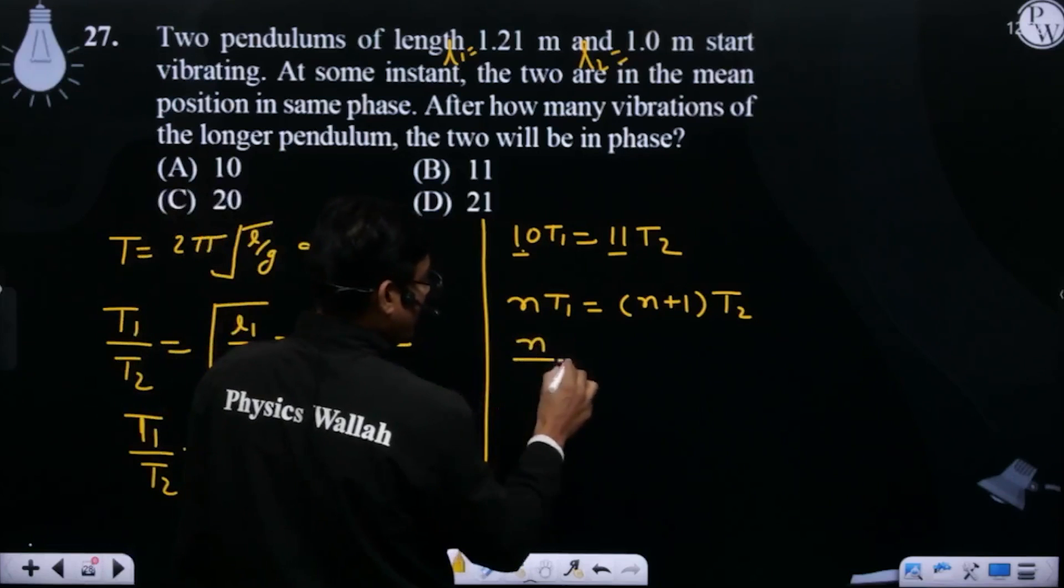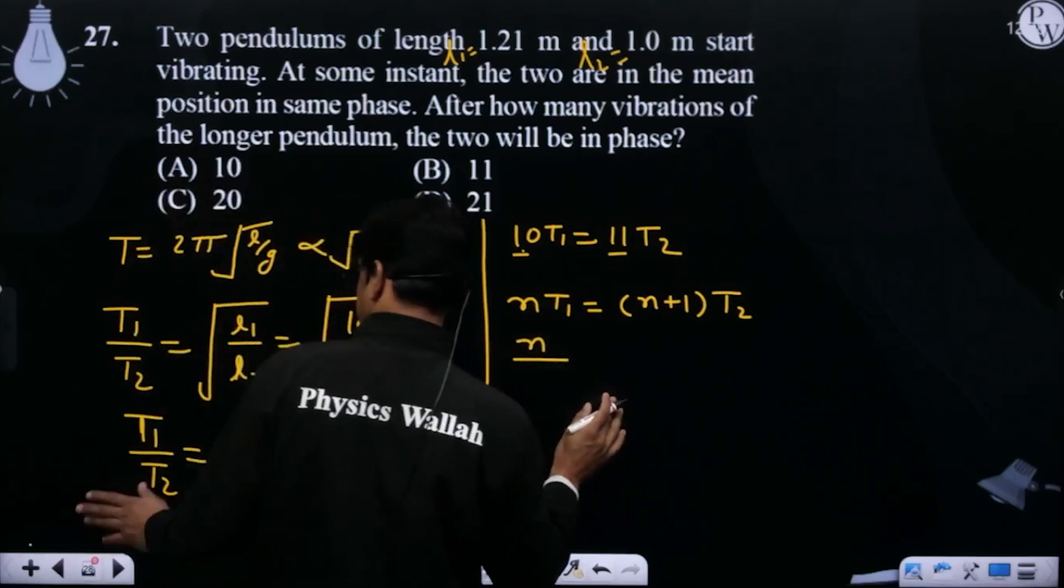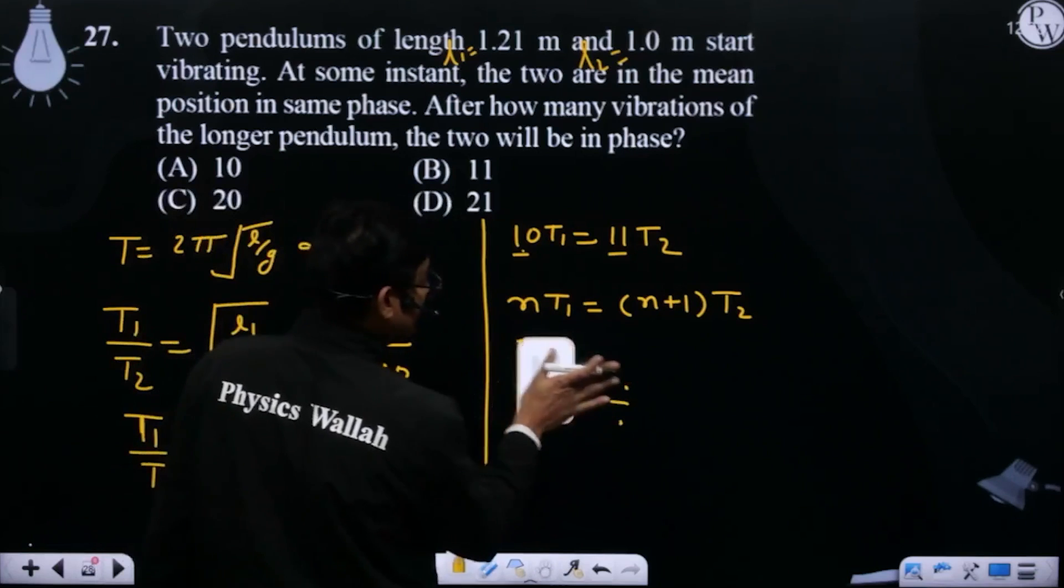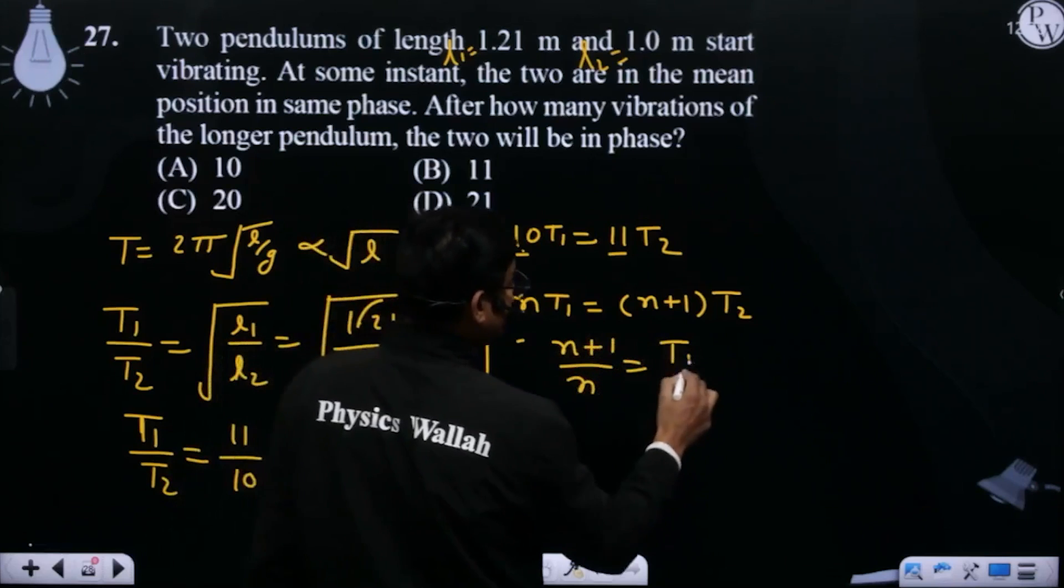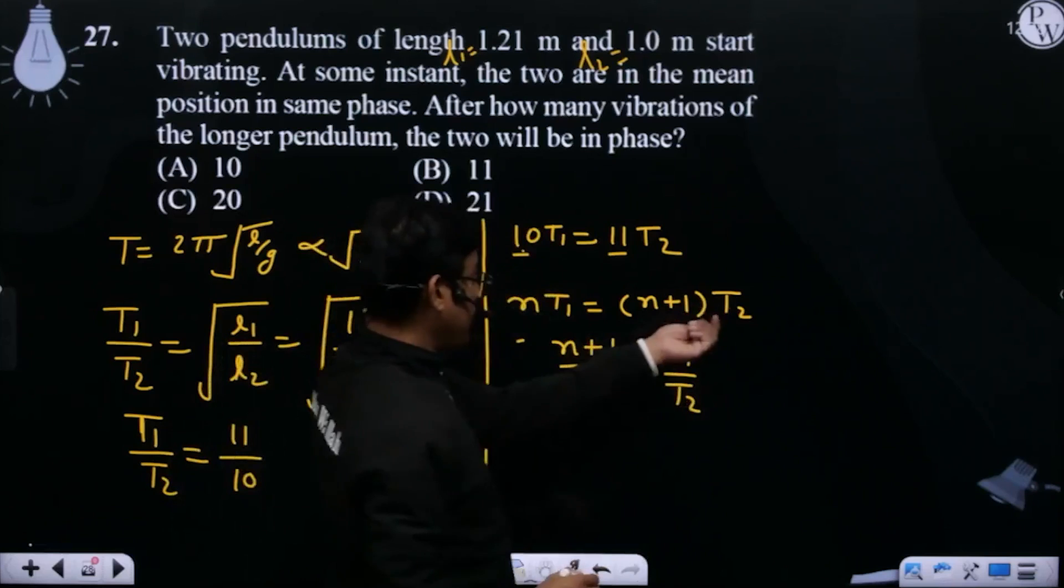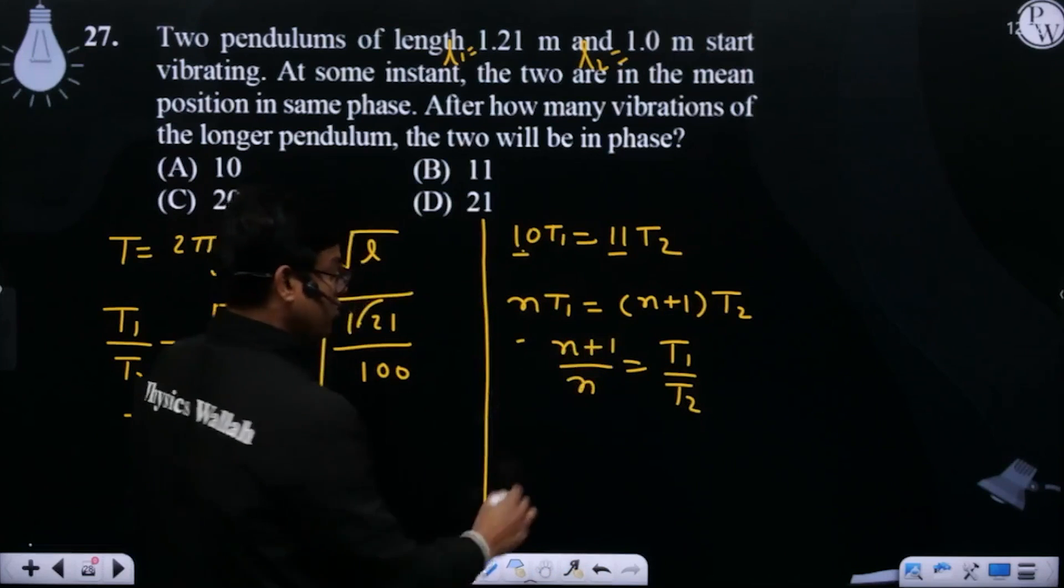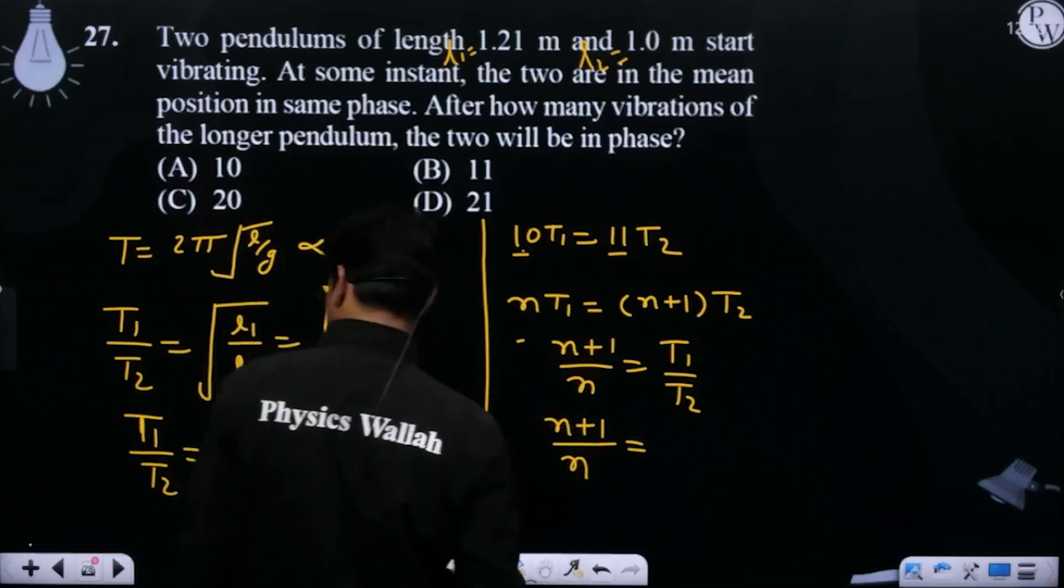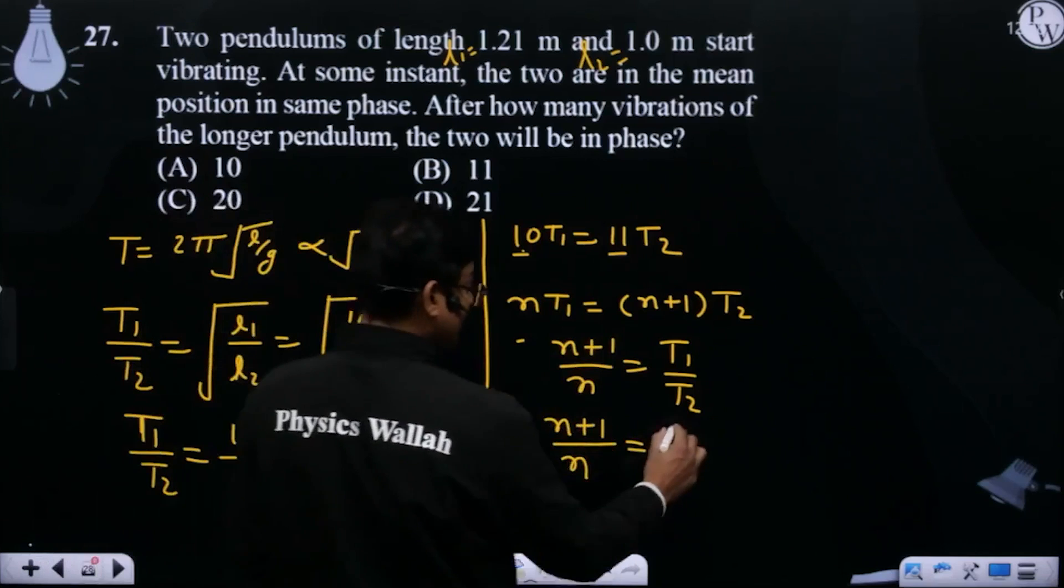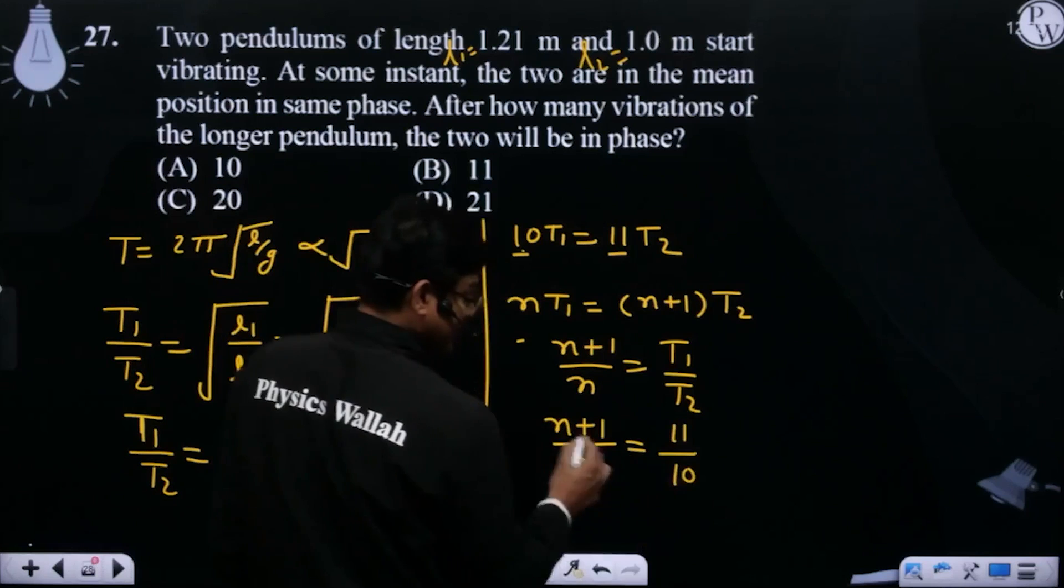Rearranging: (n+1)/n = T1/T2 = 11/10. Cross multiplying: 10n + 10 = 11n.